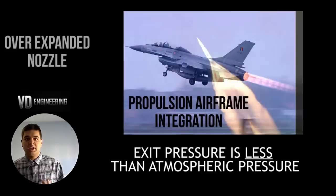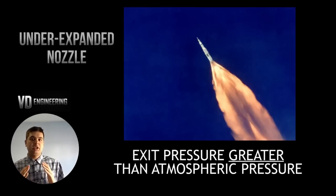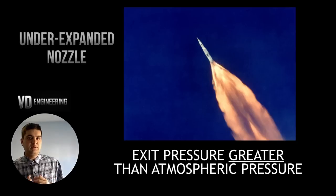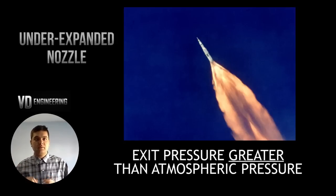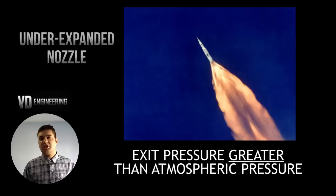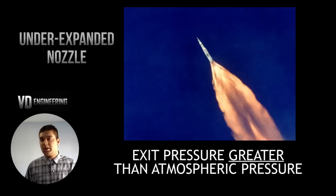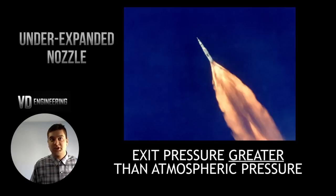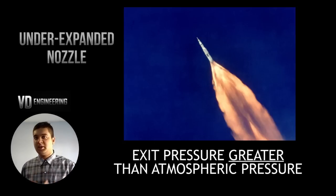An under-expanded nozzle is what we use in rockets because it creates a lot of force. It occurs when the exit pressure of the nozzle exceeds the atmospheric pressure — you can tell because the fluid expands in a conical shape outside the nozzle. If you watch a SpaceX, ULA, or Atlas V launch, the nozzle will be significantly under-expanded initially because they want to create the maximum amount of force, which is why you see a large plume outside the nozzle.